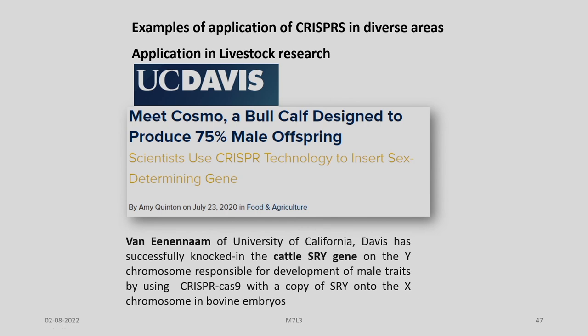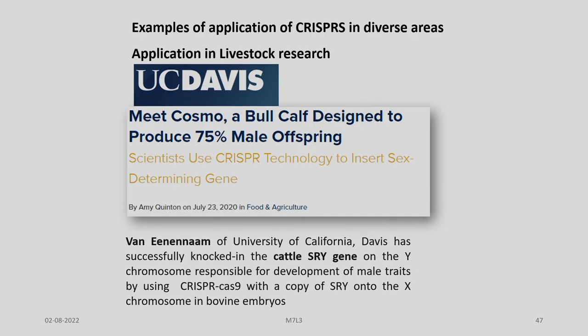There are many other applications of CRISPR-Cas9 and modified CRISPR systems, though some are alarmingly very dangerous despite potential economic benefit. For example, there is a phenomenon called genetic sexing or molecular sexing, where a particular population can be engineered to have a dominant sex or gender. A bull calf named Cosmo has been designed to produce 75 percent male offspring. Similar experiments have been carried out in silkworms to increase male silkworm production. These are matters of ethics which will be dealt with towards the end of this course.